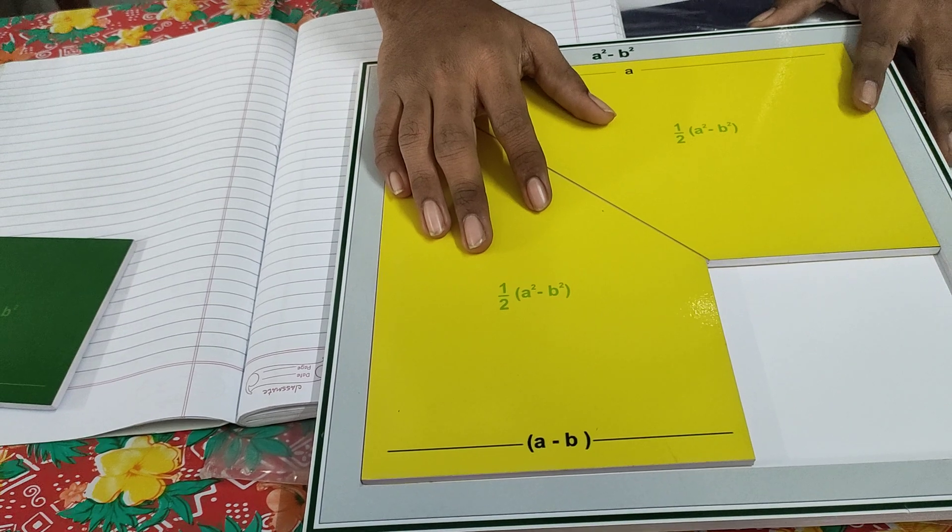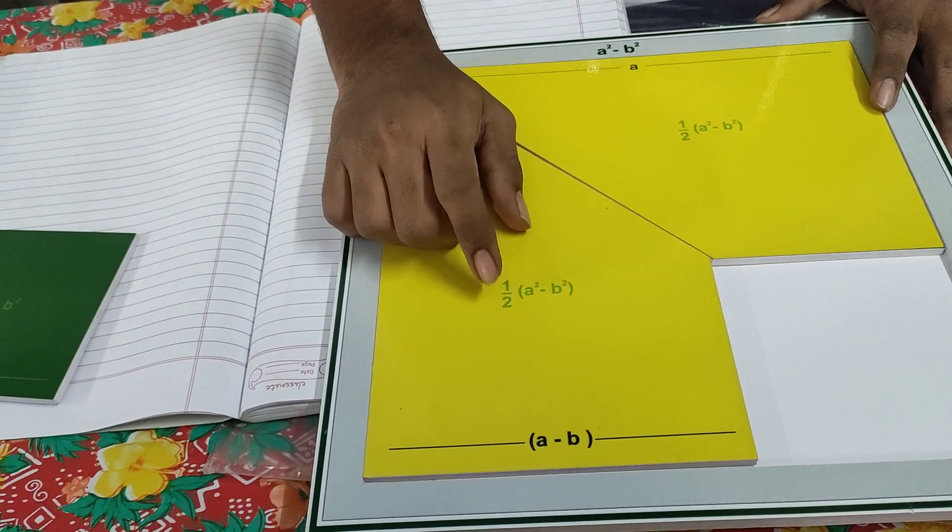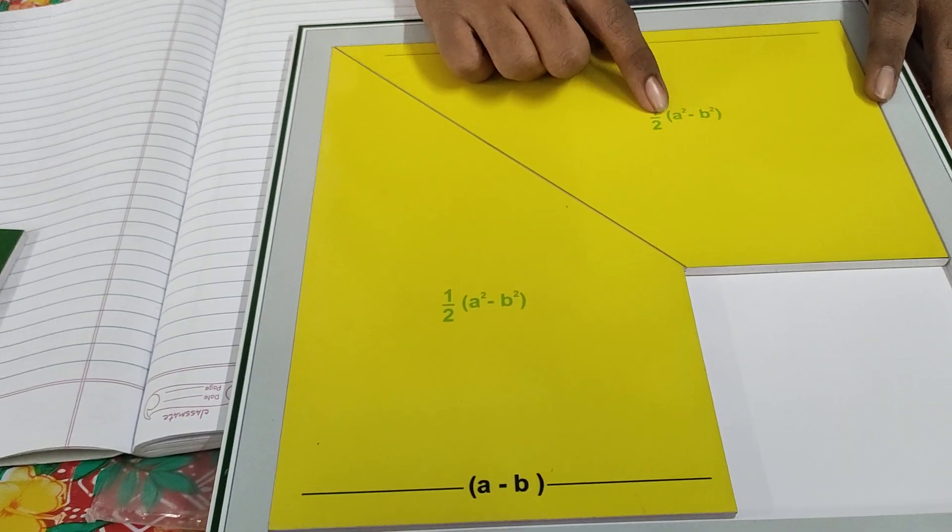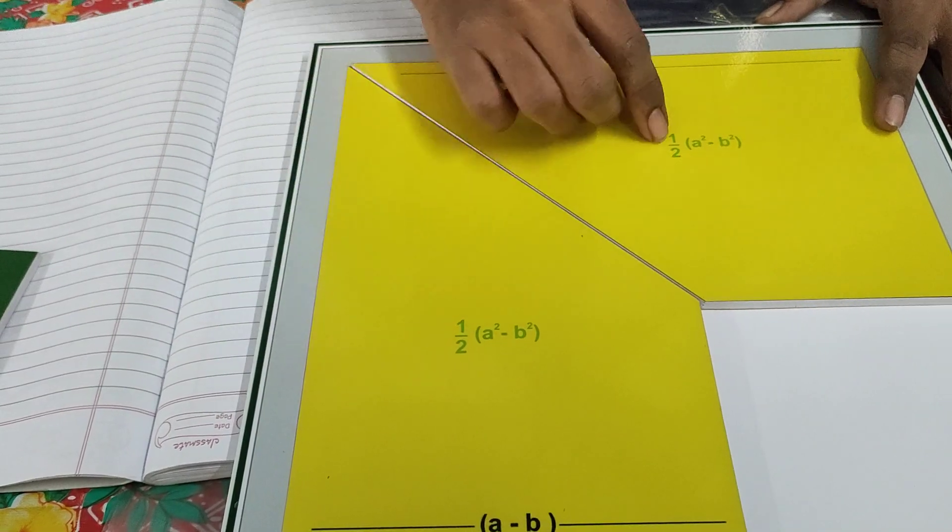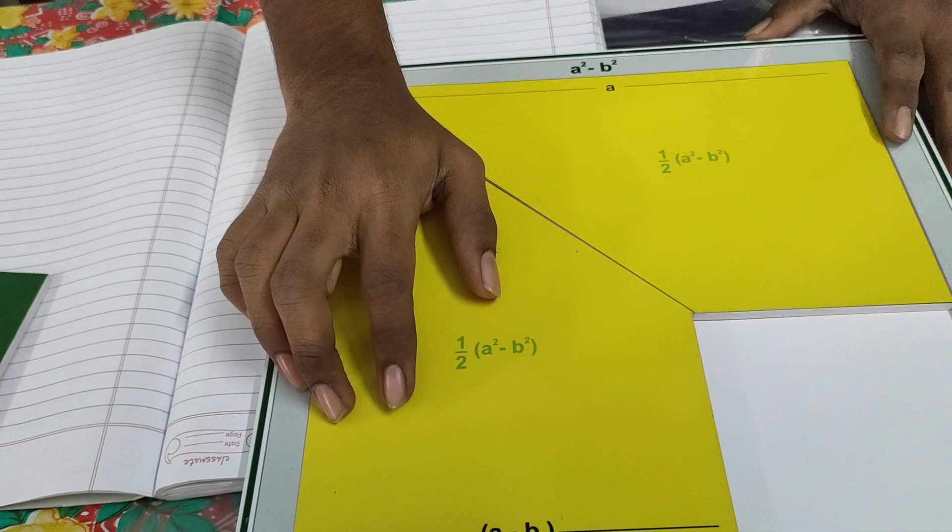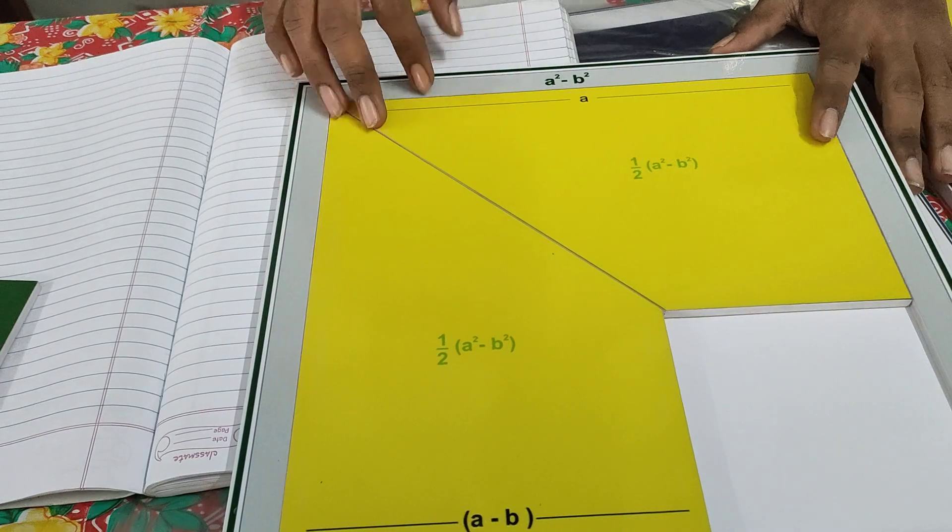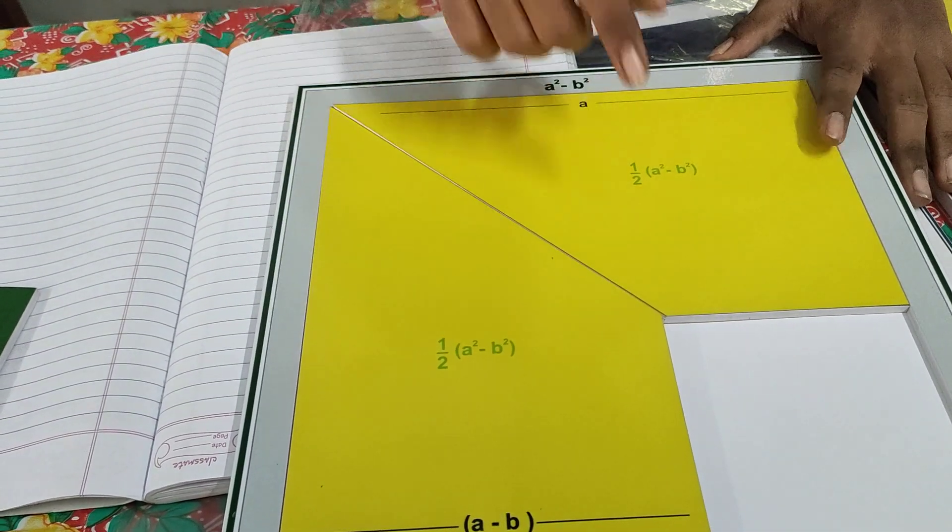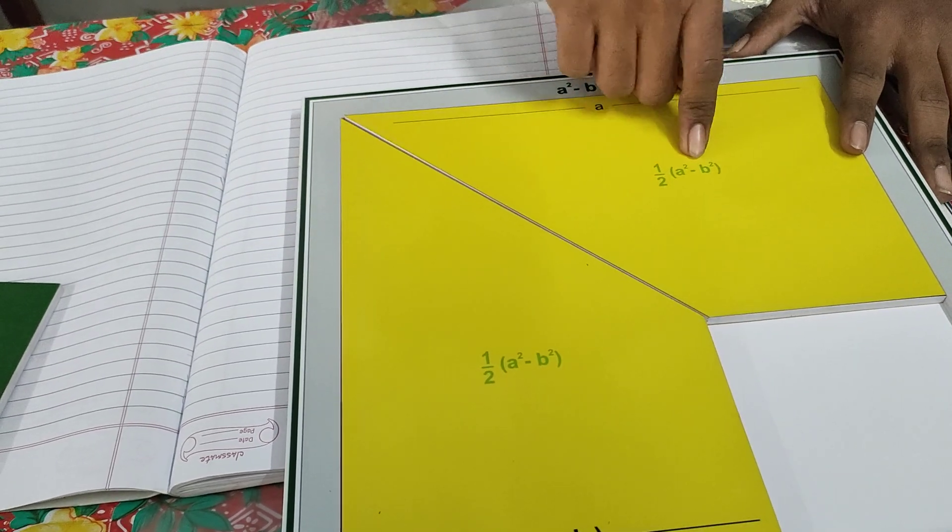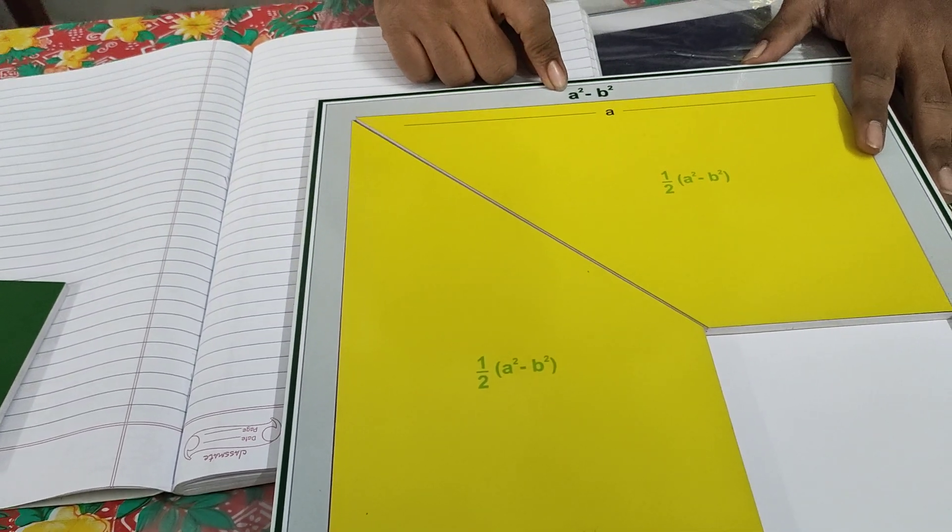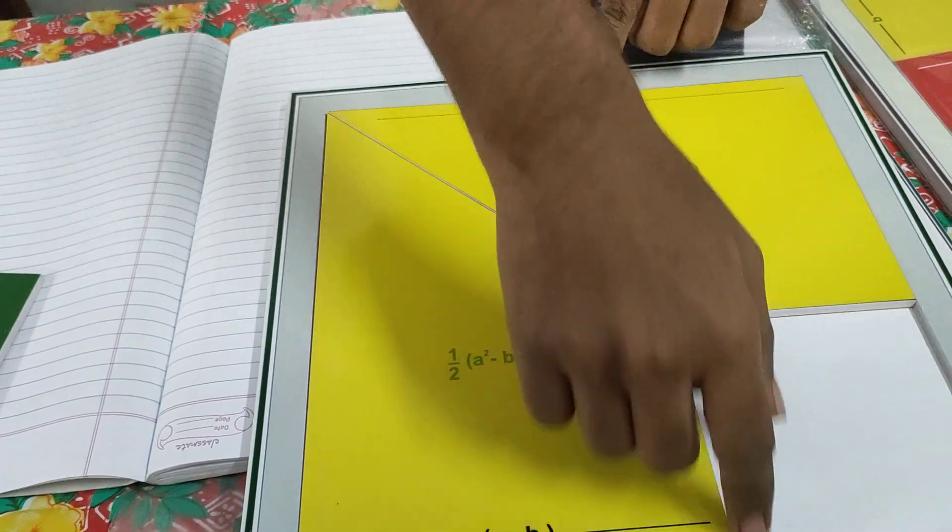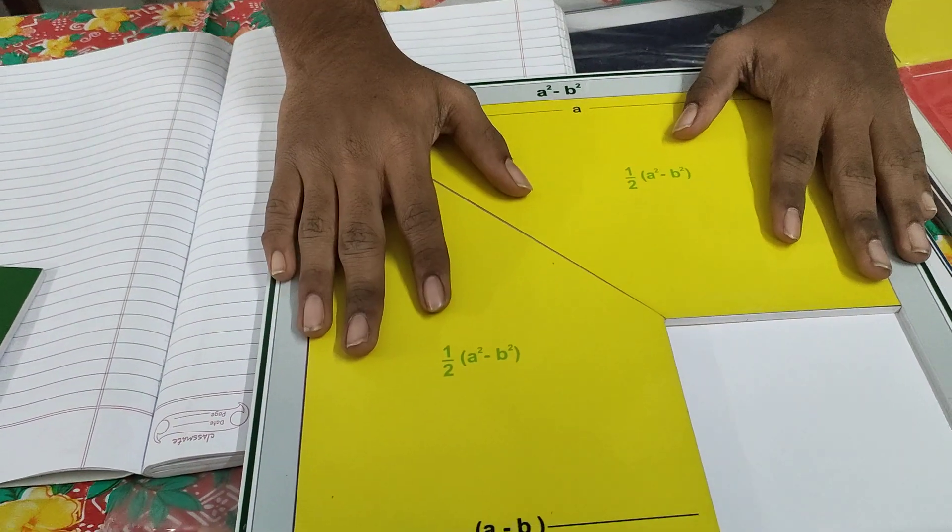The equal halves areas will be the same. As you can see here, half times (a² - b²), as well as here, half times (a² - b²). If we add these two halves, we'll get one, as 0.5 plus 0.5 equals one. When we multiply any number with one, we get the same answer: 1 times (a² - b²) equals a² - b². If we draw a line from here to here, this line forms two rectangles.